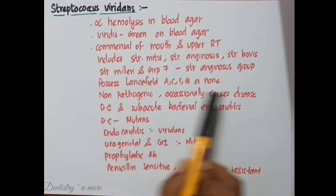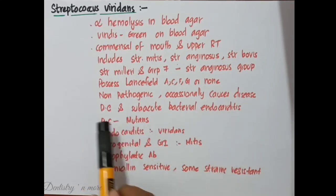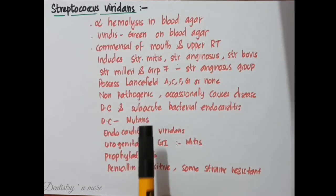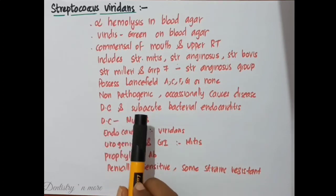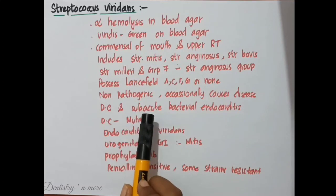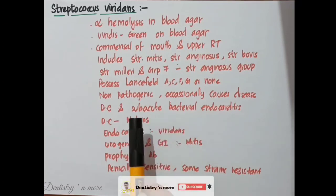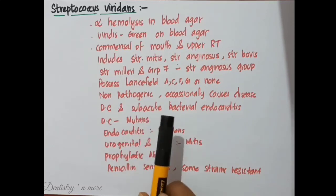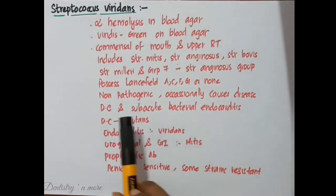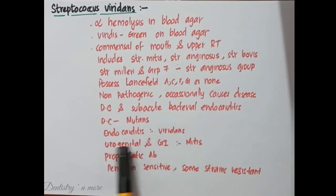The common diseases caused by Streptococcus viridans are dental caries and subacute bacterial endocarditis. Dental caries is caused by Streptococcus mutans, which breaks down dietary sucrose producing acid and a tough adhesive dextran. The acid damages the dentine while the dextran binds together food debris, mucus, epithelial cells, and bacteria to form dental plaque, leading to dental caries. About 40% of subacute bacterial endocarditis is caused by the viridans group of Streptococcus.